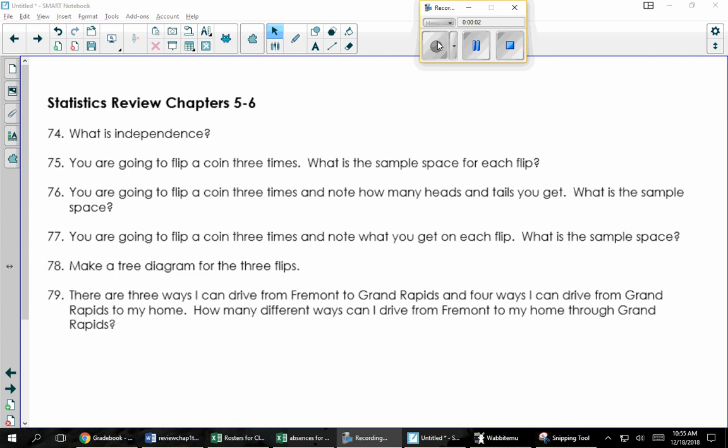So on the review for chapters 5 and 6, the first one says what is independence? The idea for independence is that knowing one doesn't change the probability of another. Another way to put it is the probability of A given B is the same as the probability of A, because A didn't care about B. A was independent of B. Just because I said B happened doesn't change A's likelihood of happening.